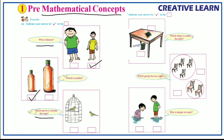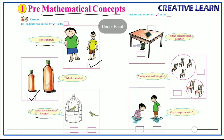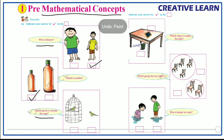Now the next question: which parrot is outside the cage? Look at the picture — here two parrots are given. One is inside the cage and the other one is outside the cage. So where should we keep the right mark? We have to keep the right mark here — this parrot is outside the cage.